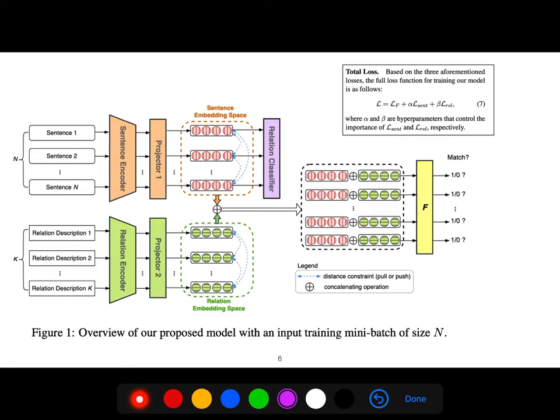And so this is the architecture where the total loss is the loss of the F comparator, this comparator, the loss of sentences and relations. And we will talk about it. So we have a couple of N sentences and K relations. It doesn't matter if it is seen data or unseen, because the relation, we want to see them in the space.